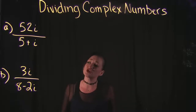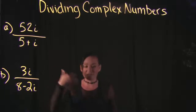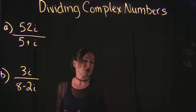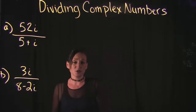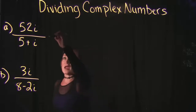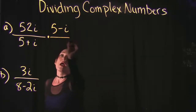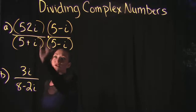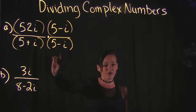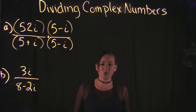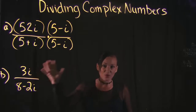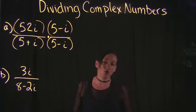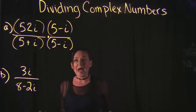We multiply numerator and denominator by the conjugate to simplify — essentially we're trying to get rid of the imaginary numbers in our denominator. Because our denominator is 5 plus i, we multiply by its conjugate 5 minus i. Note that 5 minus i over 5 minus i equals 1, so we're just multiplying by 1 — it's not changing the value of the fraction, just the form.